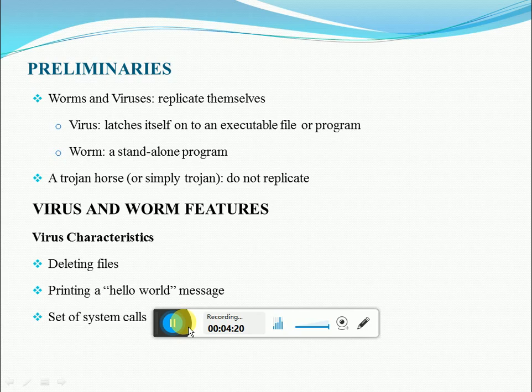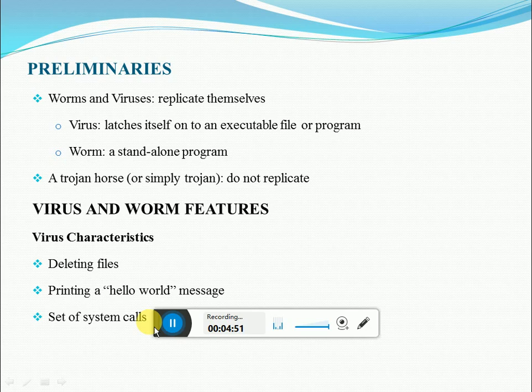The larger file size helps antivirus software detect infected code. To escape detection, some viruses modify the file's service interrupt handler that returns the file's attributes, so the handler may be programmed to return the uninfected length of the file — helping the virus evade antivirus software. Another technique is to compress the infected file so its length remains the same as the original. To infect a file, the virus first compresses it and then prepends the virus code to the compressed file. The infected file must be uncompressed just prior to execution.